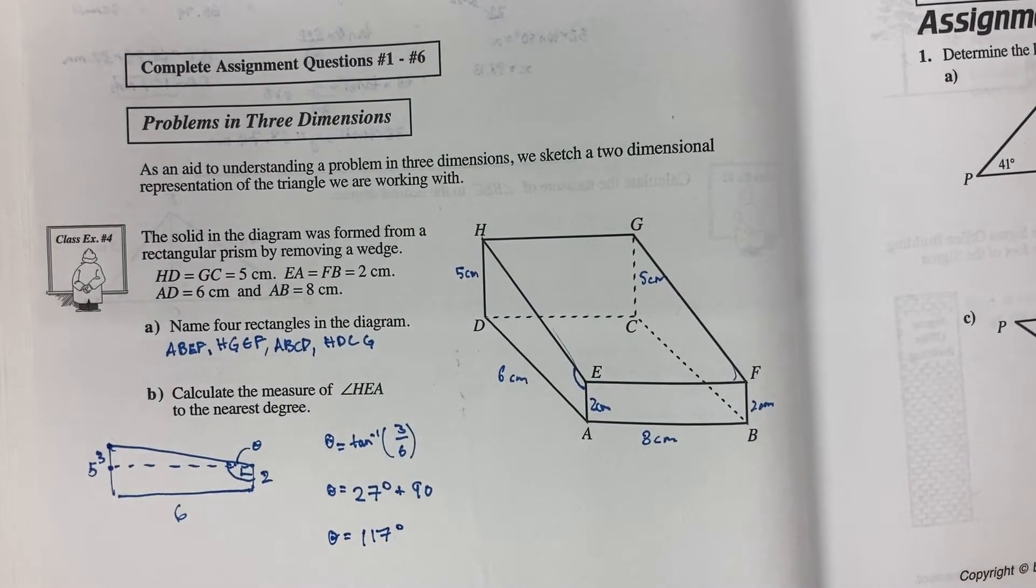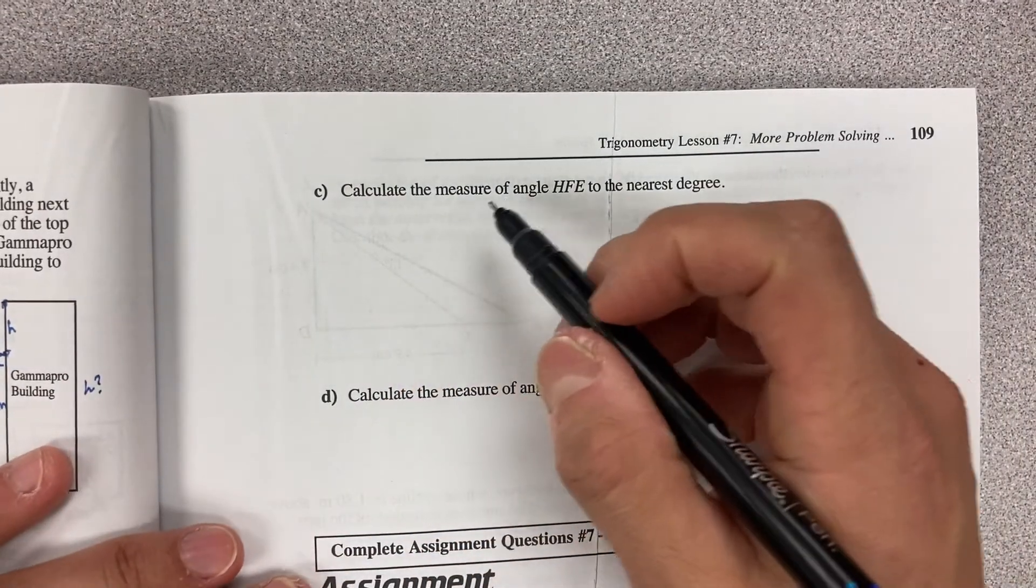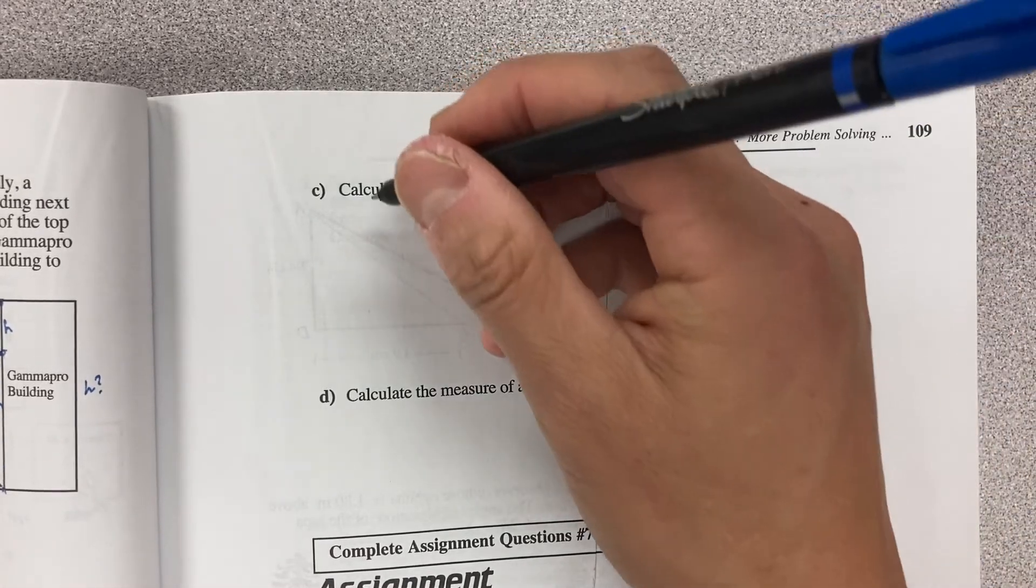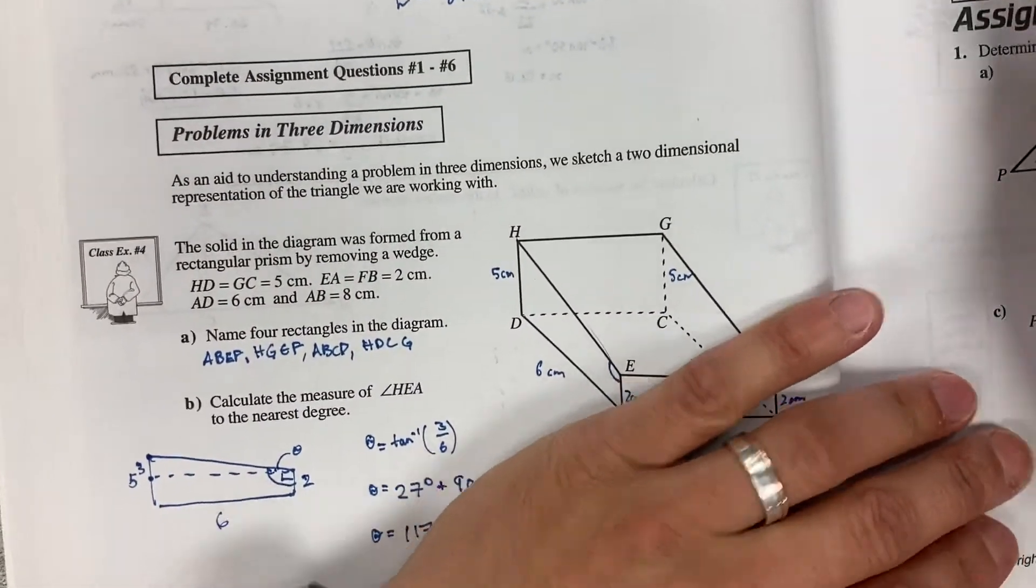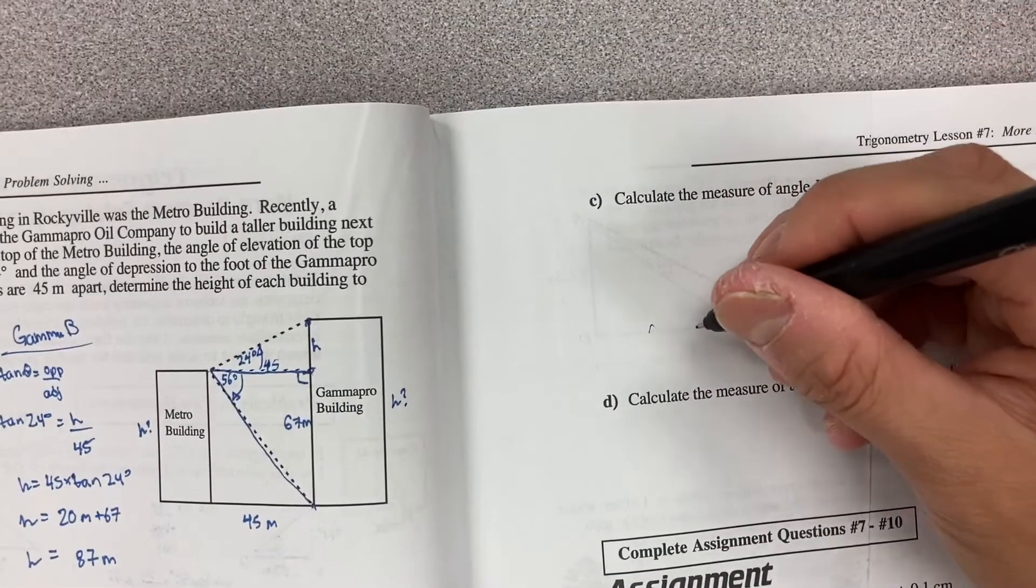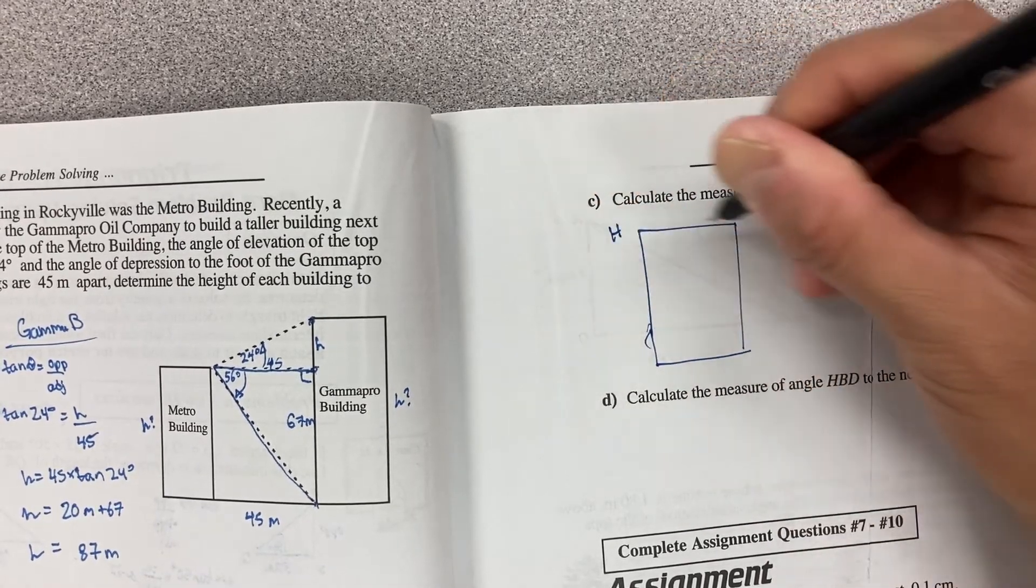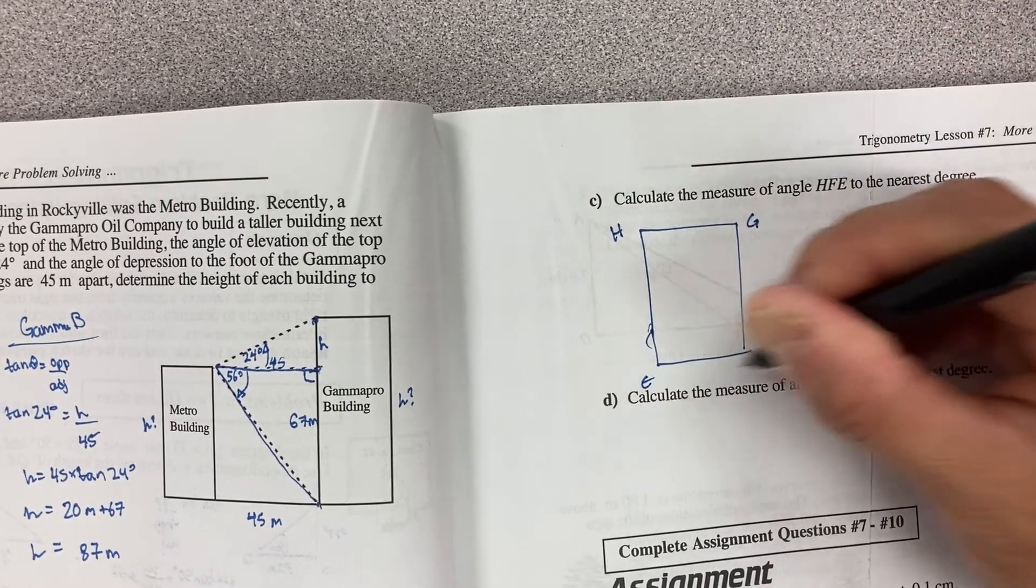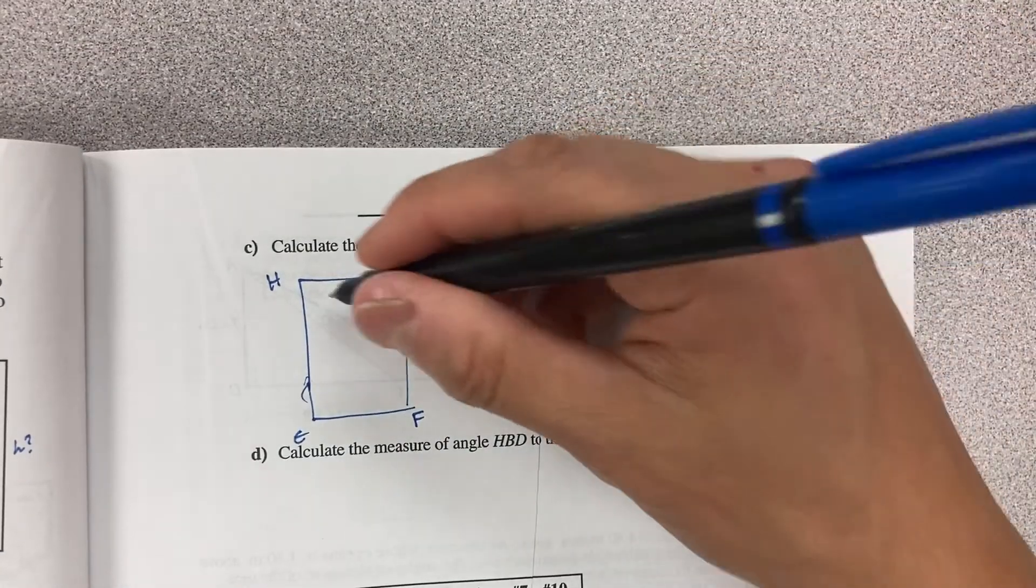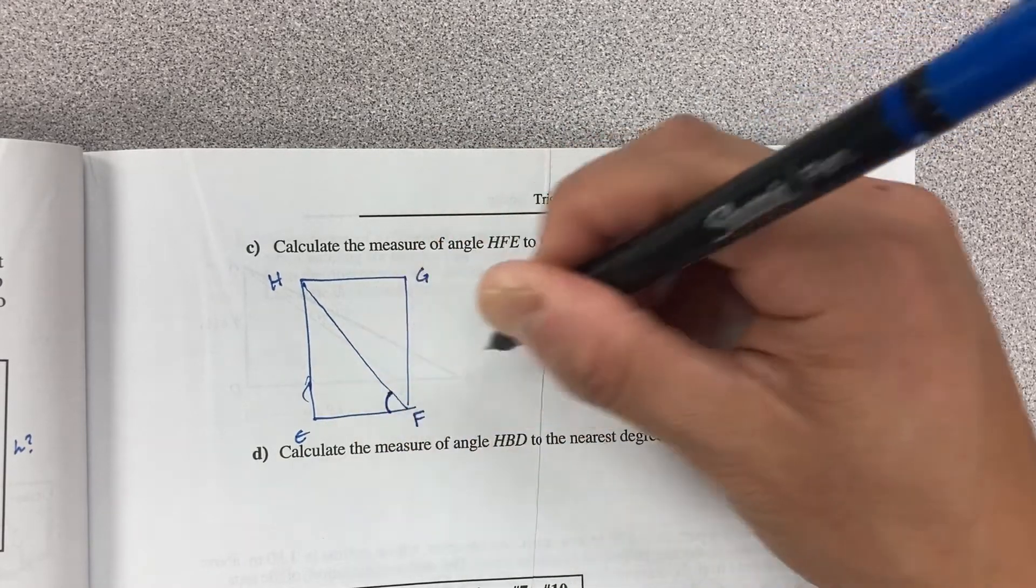Now for my next question I want to calculate the measure of angle HFE to the nearest degree. Now HFE we have to look at where that is. So angle HFE. What I'm going to do is I'm going to redraw the surface of this object because the surface was HGEF. And if I'm looking for angle HFE then that's the angle given to me right here.